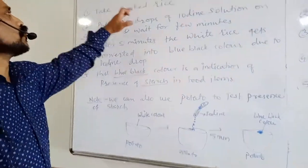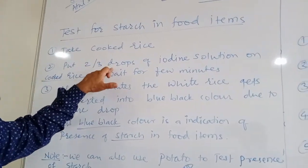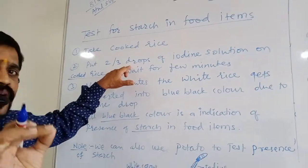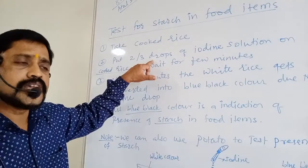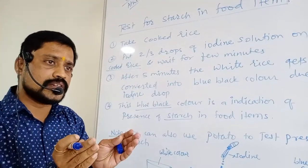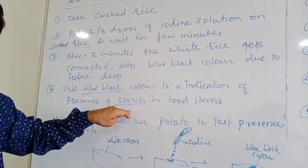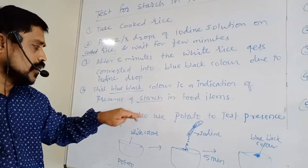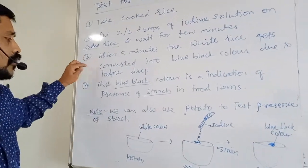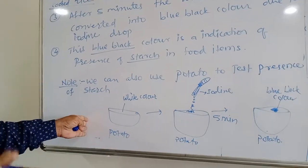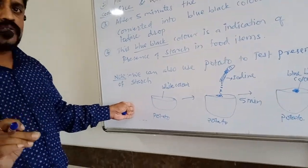The same procedure is here. Take cooked rice. Add 2-3 drops of iodine on that white rice. Wait for few minutes. After 5 minutes that white color will get changed into the blue black color. That is the indication of starch. Instead of rice you can also take potato which is more easy and convenient to do at home.